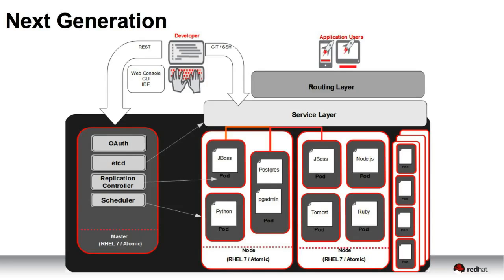On top of the pod, on every single node there's a service layer. The service layer is what talks to etcd — it knows the relationship between pods to form applications and knows what all the nodes are doing. In this way, every node knows what every other node is doing, making it very easy to replicate and move things around. The brain trust of that relationship is etcd.